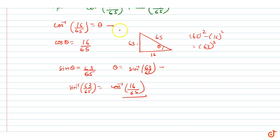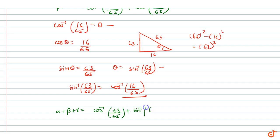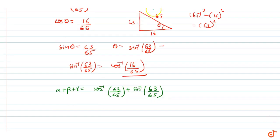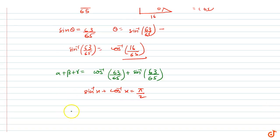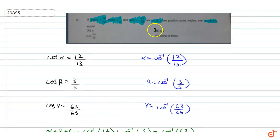Using this result, α + β + γ = cos⁻¹(63/65) + sin⁻¹(63/65). Now we know the formula that sin⁻¹(x) + cos⁻¹(x) = π/2. Applying this, α + β + γ = π/2. So our answer is π/2, that is option B.